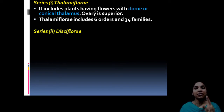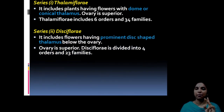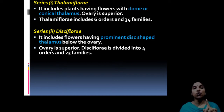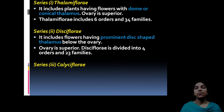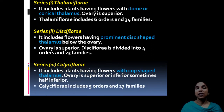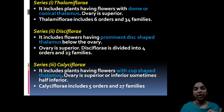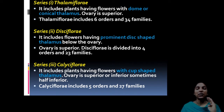The second series is Disciflorae, which has a disc-shaped thalamus and a superior ovary. It is divided into four orders and twenty-three families. The third series is Calyciflorae, where the thalamus is cup-shaped. Here the ovary is neither clearly superior nor inferior — it is half inferior or half superior — and it belongs to five orders and twenty-seven families.